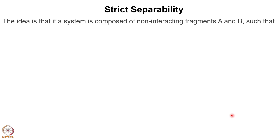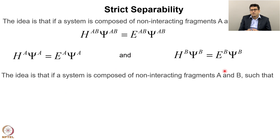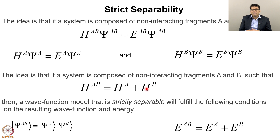The third criterion is strict separability. If a system is composed of non-interacting fragments A and B, I can write the Schrödinger equation for the total system and for individual systems A and B separately. If the fragments are at infinite distance, the Hamiltonian is separable: H_AB equals H_A plus H_B. Under this condition, if the wave function model is strictly separable, the total wave function can be written as a product of the individual wave functions and the energy as a sum of the individual energies.